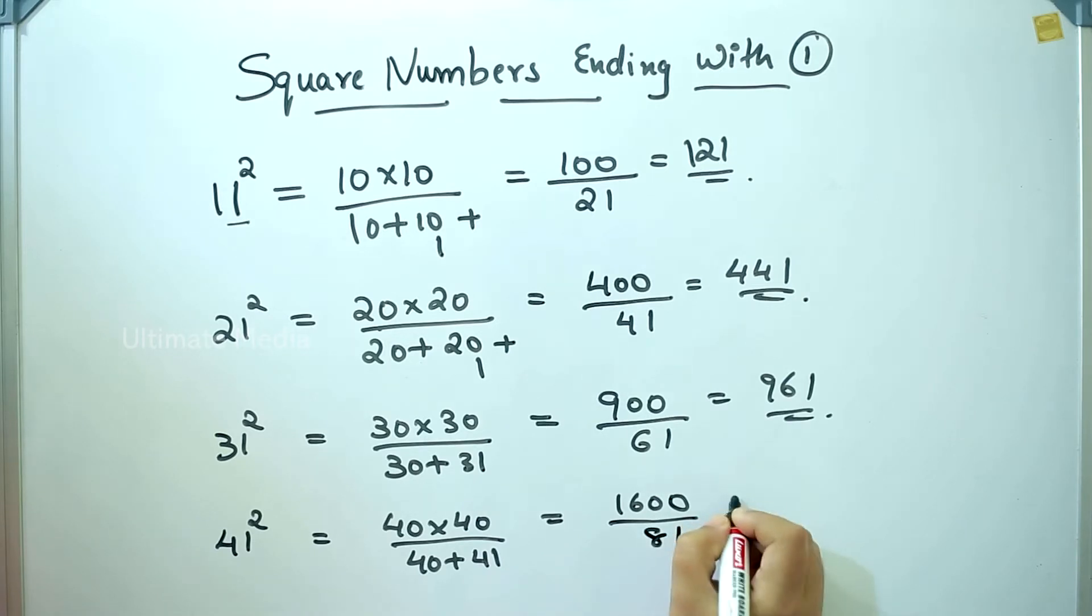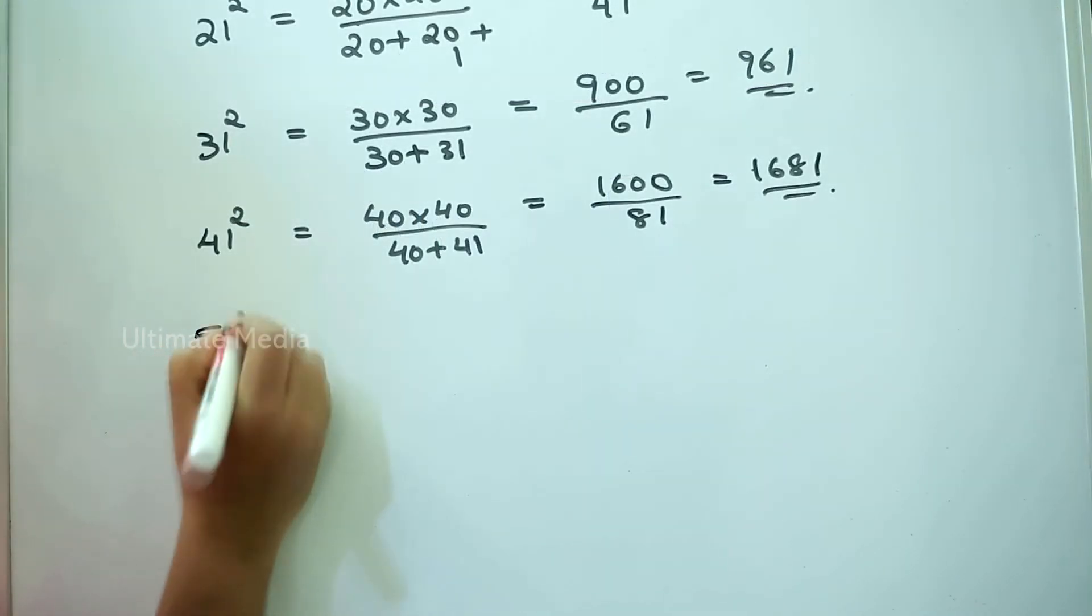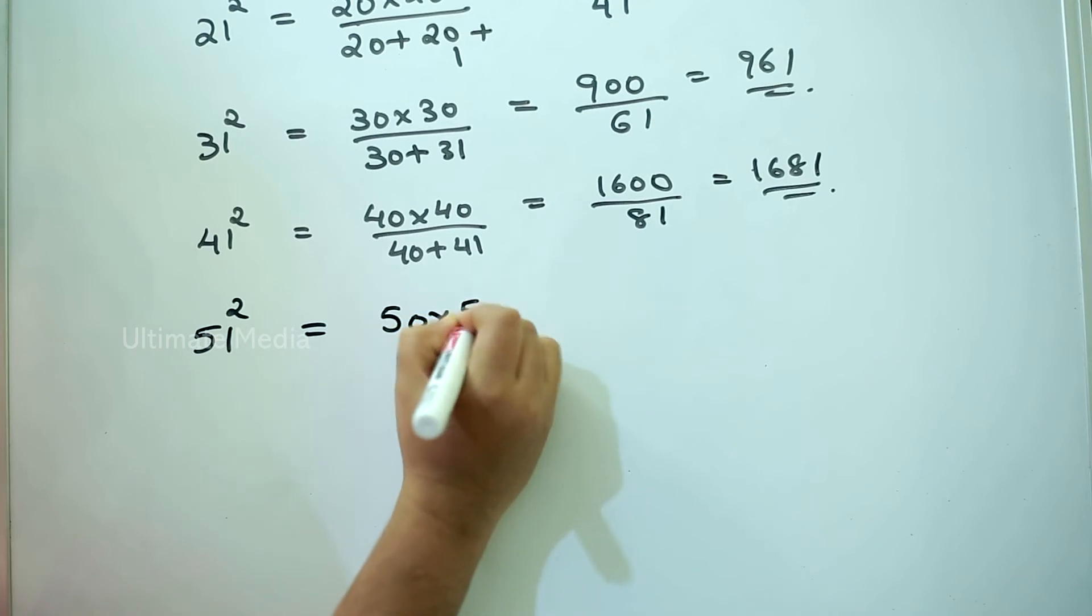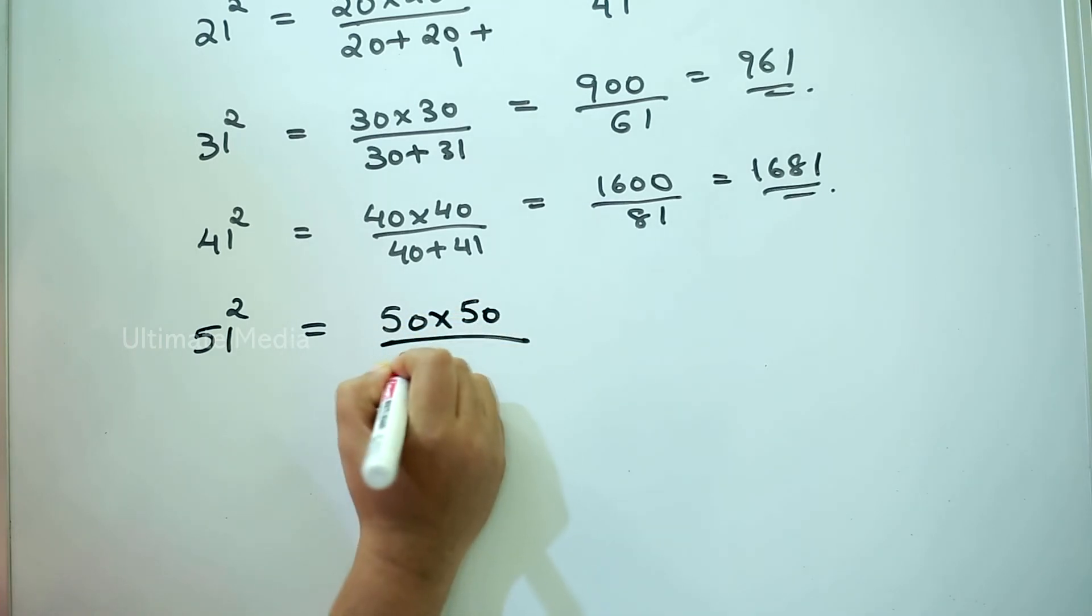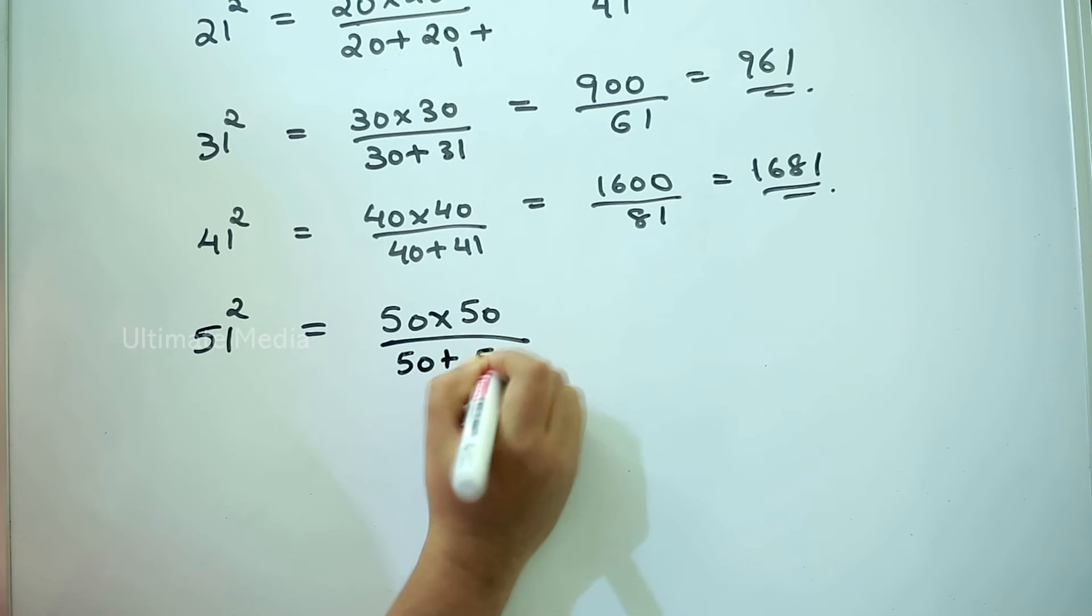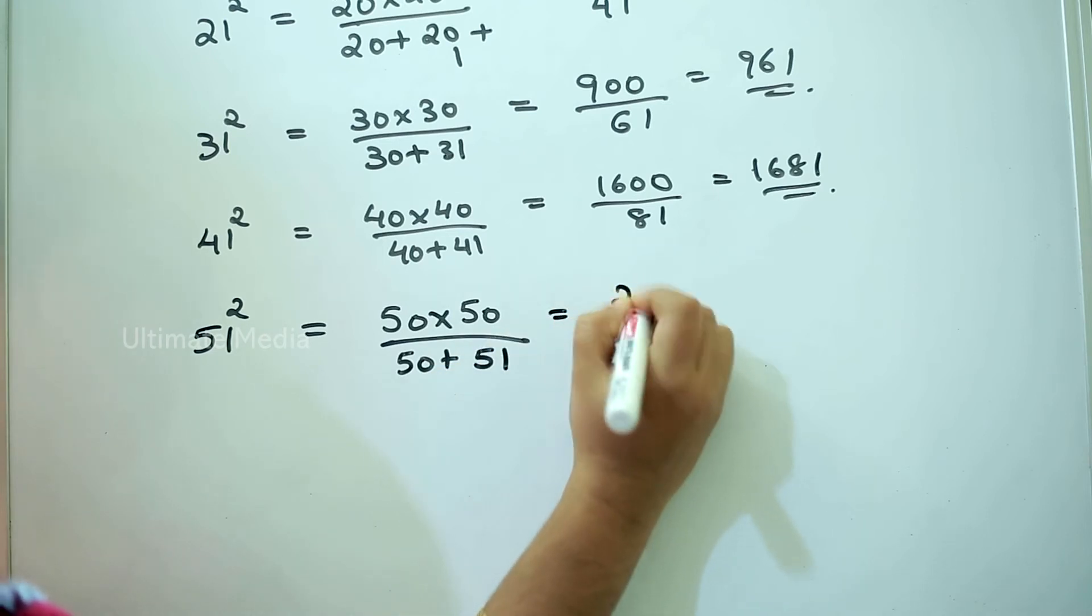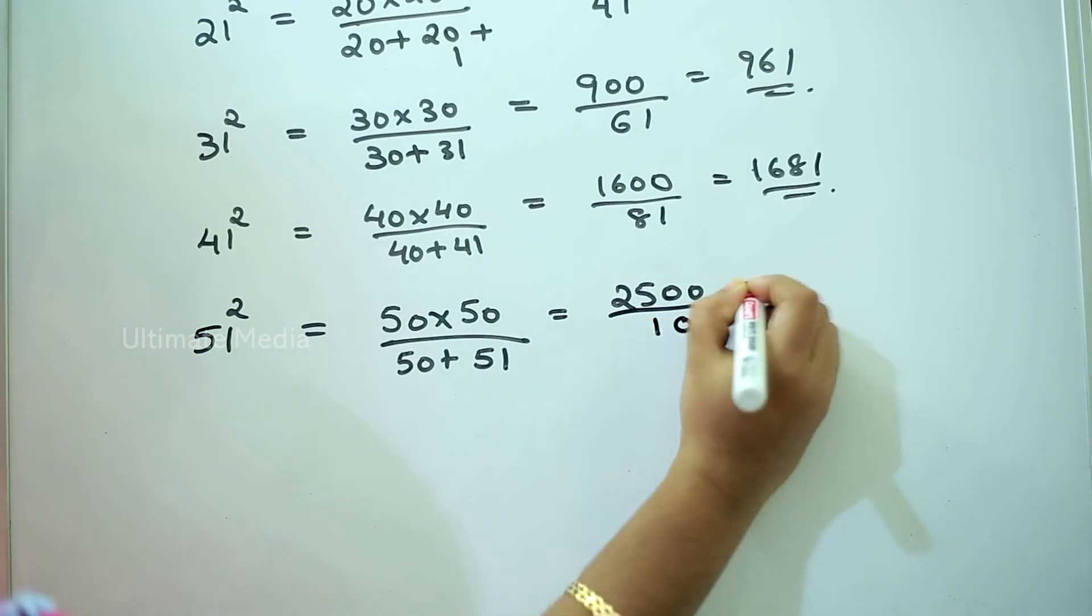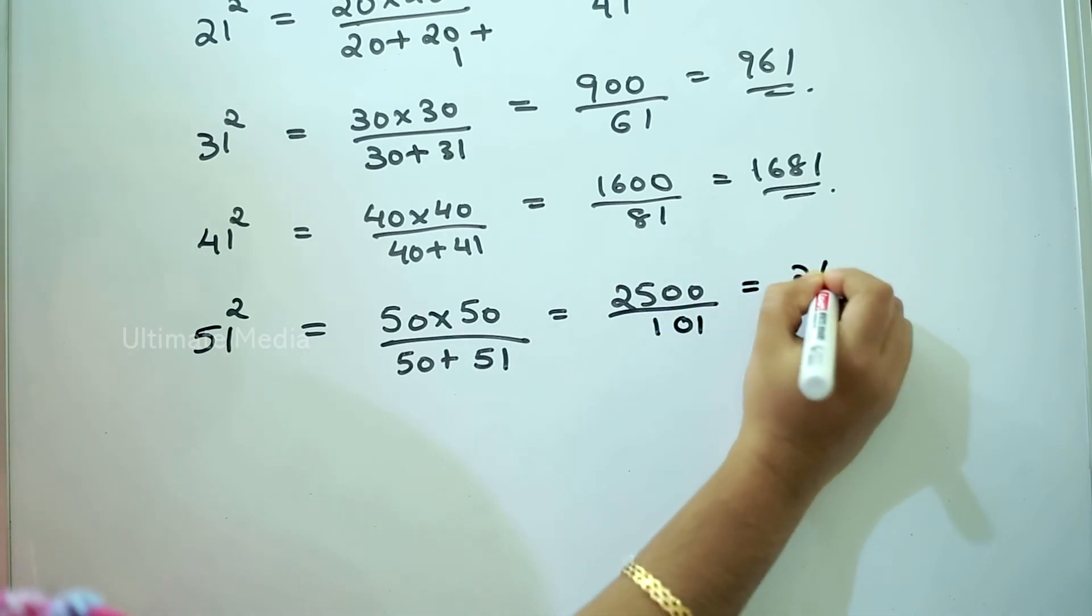51 square: 50 into 50 divided by 50 plus 51. That's 2500 divided by 101, about 2601.